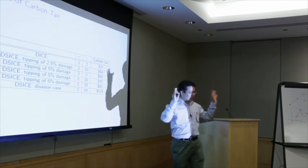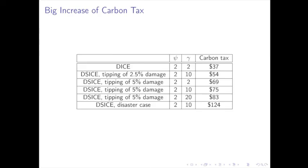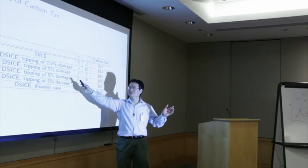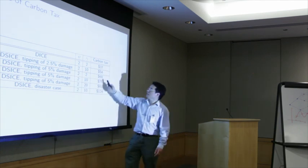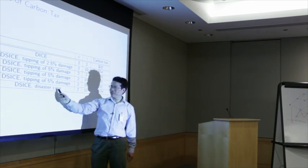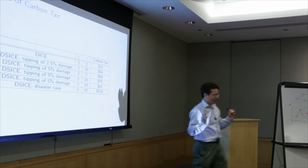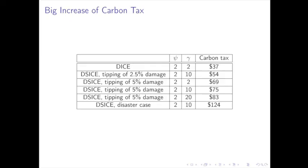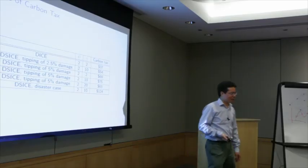We can tell President Obama there should be a big increase in carbon tax when considering these uncertainties. If once a tipping event happens there will be a 2.5 damage multiplier, the optimal carbon tax increases from 37 to 454. If there is one disaster case with a 28% reduction in production — even with very small probability of only 0.1% by the year 2100 — it still has a big impact, raising the carbon tax to 124. That concludes my talk. Thank you very much.